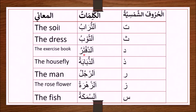Thal, a'tdaftaru — the exercise book. Thal, a'tubabatu — the housefly. Ra, a'rajulu — the man.